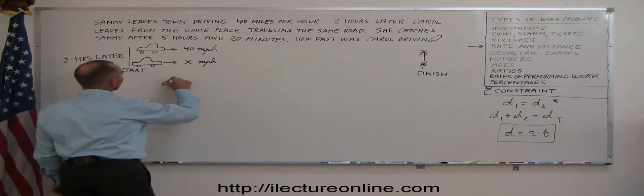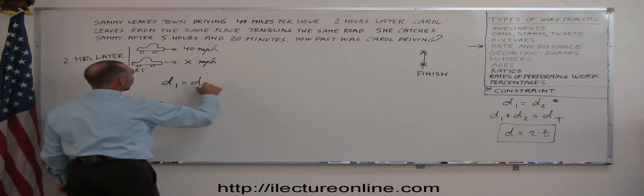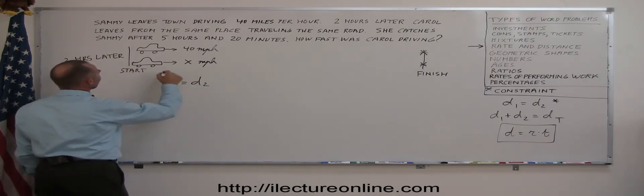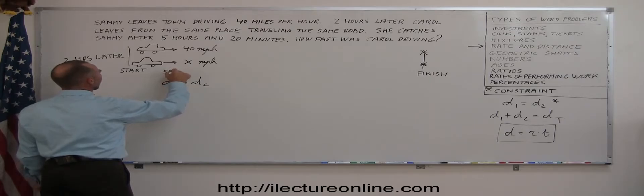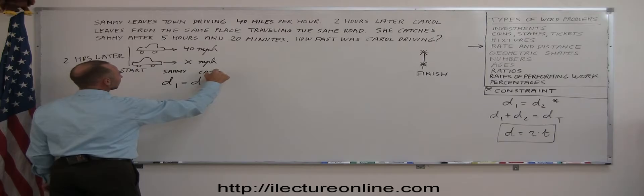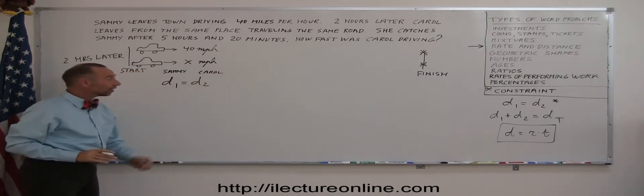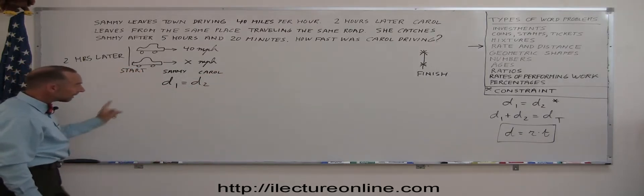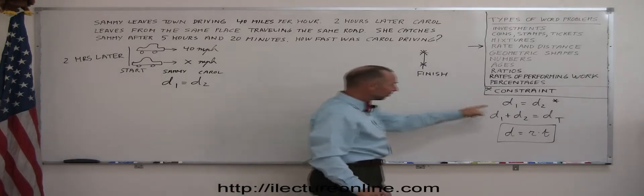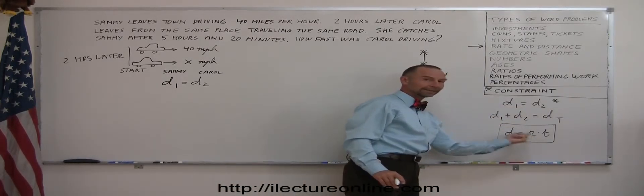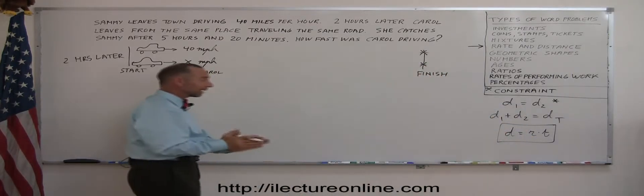We can write distance 1 equals distance 2. Distance 1, let's say that's for Sammy. And distance 2 is for Carol. And since they travel the same distance, you can say distance 1 equals distance 2. Now we're going to replace each distance by what they're equal to. Distance is defined by the rate times the time.